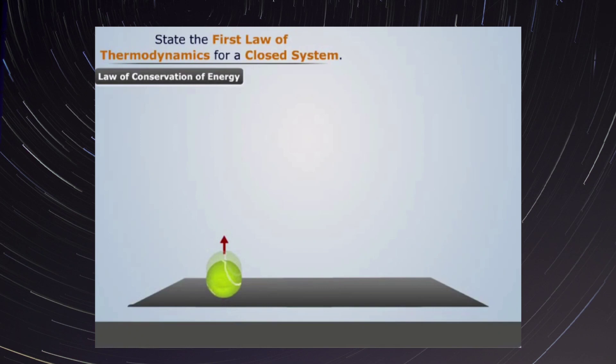When we throw the ball in the upward direction, initially it attains negligible potential energy and a huge amount of kinetic energy. Let us assume that the ball attains a kinetic energy of 100 kilojoules.